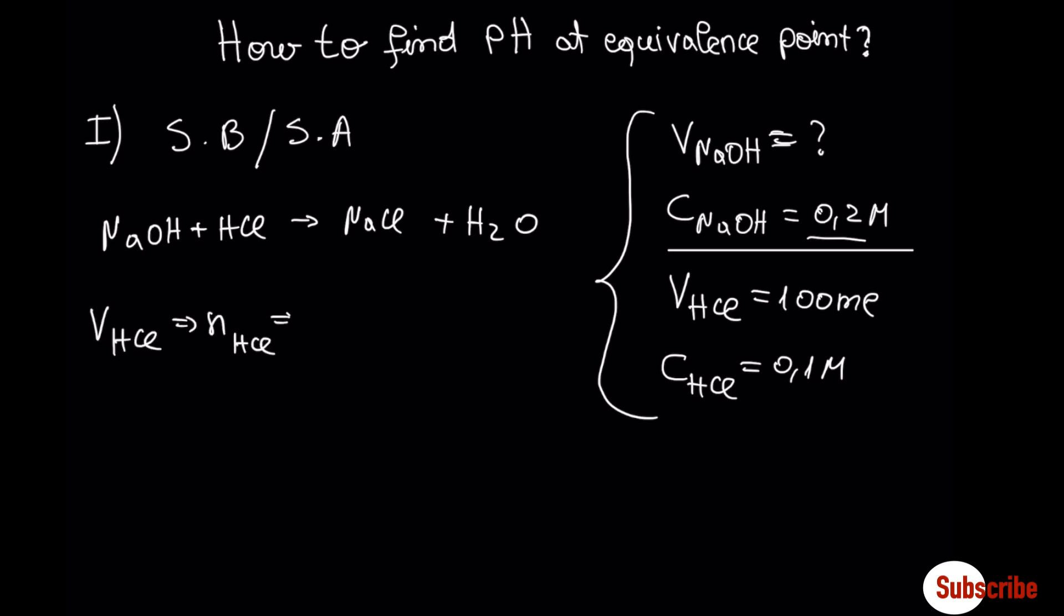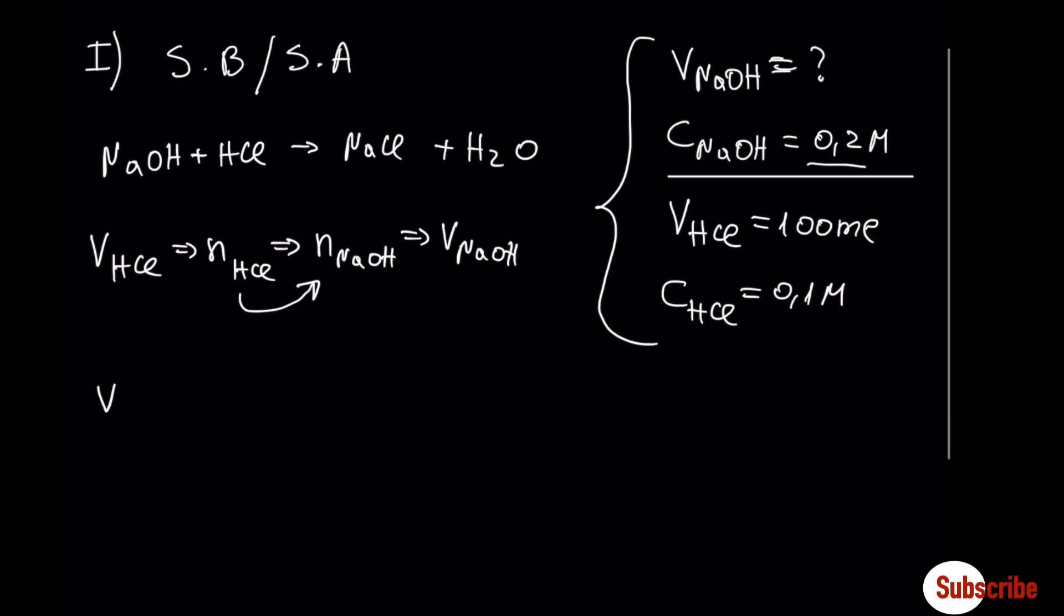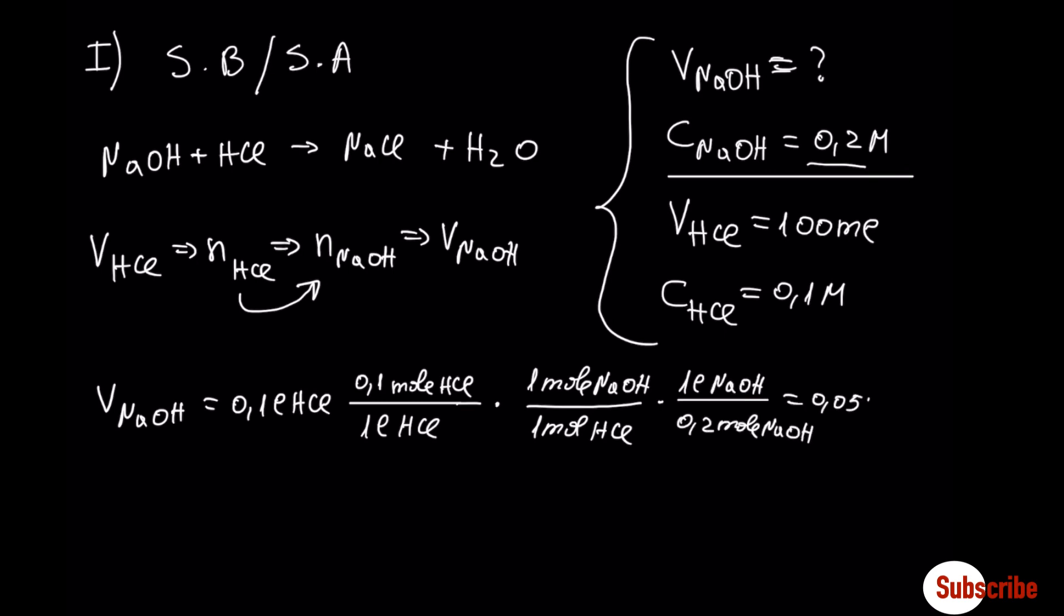Here, at this step, we have to use the stoichiometry of the reaction, or simply coefficients in the balanced equation. Let's run the calculations. 0.05 liter or 50 milliliter. This is the amount that we need to neutralize completely the acid in the Erlenmeyer.